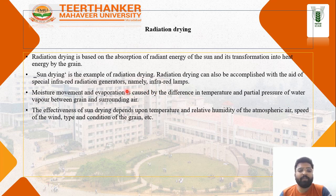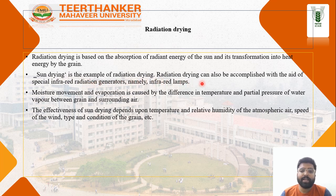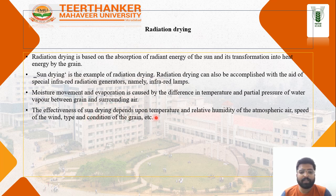Radiation drying is a newer concept based on the absorption of radiation energy, which is transferred into heat energy by the grain. Sun drying is the greatest example of radiation drying. It can also be accomplished with the aid of special infrared radiation generators, namely infrared lamps. Moisture movement is caused by the difference in partial pressure of water vapor between the grain and surrounding air. The effectiveness of sun drying depends upon temperature, relative humidity, and atmospheric air speed.